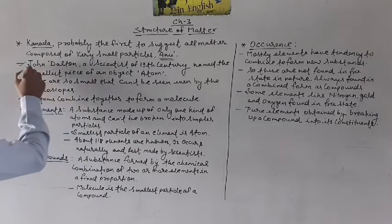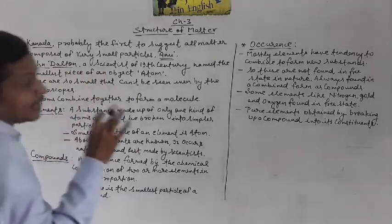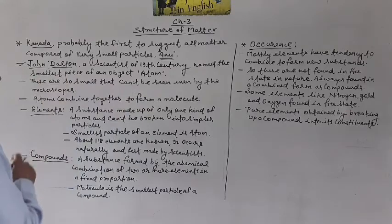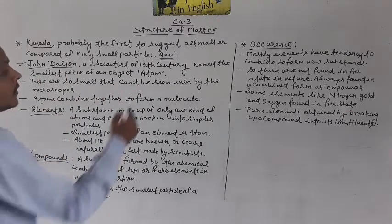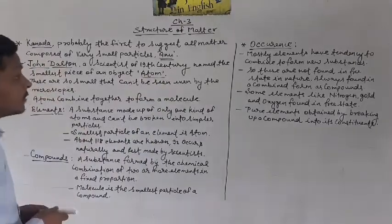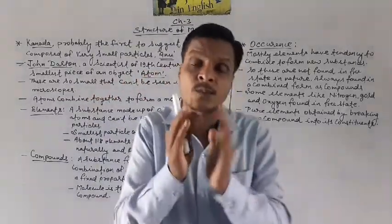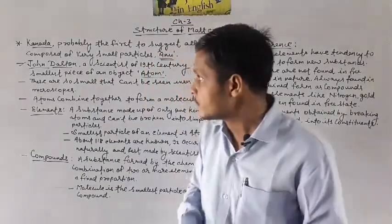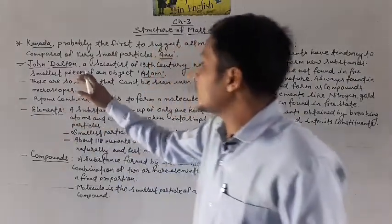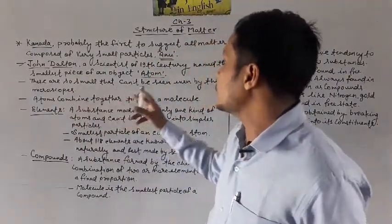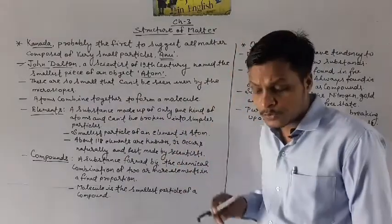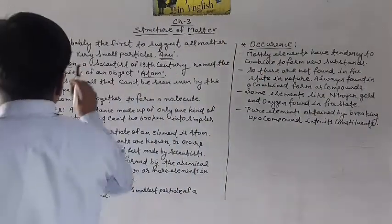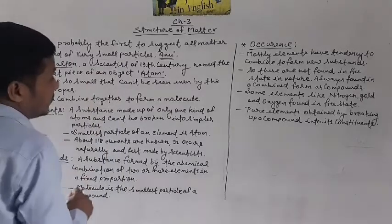Next, John Dalton, a scientist of the 19th century, named the smallest piece of an object as atom. John Dalton ne jo smallest piece of object hai, use naam diya — atom. These atoms are so small that they can't be seen even by microscopes. Yeh itne small hain ki inko hum microscopes se bhi nahi dekh paate the.